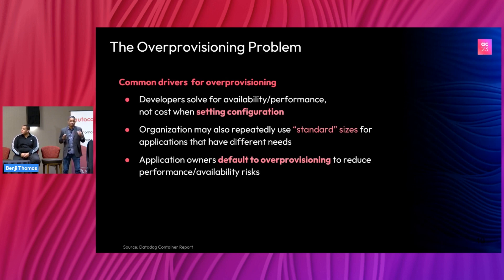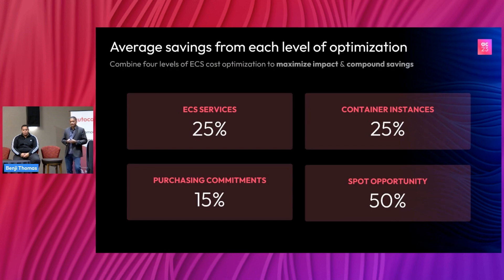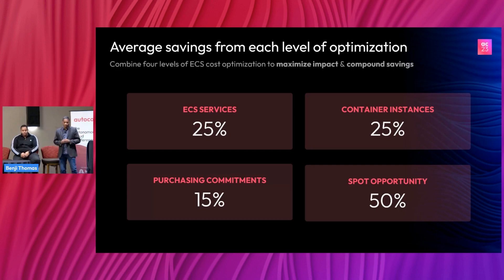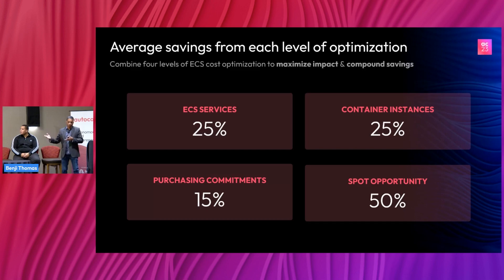Most organizations over-provision their compute because they don't know what to provision for, so they just put double or triple the capacity to handle seasonality peaks and special use cases. Engineering teams are focused on releasing features, not on what runs in production, so they keep it safe and over-provision. Amazon actually gives you different levers to optimize costs and performance: you can right-size services vertically or horizontally, adjust your cluster by managing container instances, use purchasing commitments like savings plans and RIs, and use spot instances where appropriate for fault-tolerant workloads.